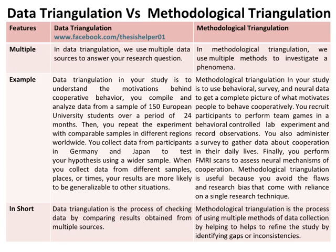Whereas, an example of methodological triangulation is to use behavioral, survey, and neural data to get a complete picture of what motivates people to behave cooperatively.